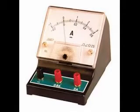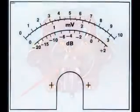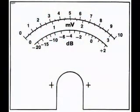In either case, the principles applied in adapting a display unit to measure current, voltage, or resistance are the same. The display mechanism of a meter is often referred to as a movement, borrowing from its mechanical nature to move a pointer along a scale so that a measured value may be read.